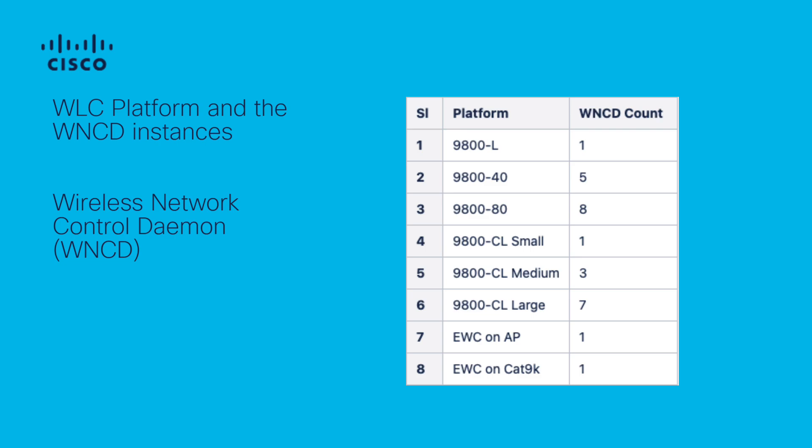Wireless client sessions, however, can roam between WNCDs as clients move from one AP to another. Currently, the Cisco 9800 platform uses the site tag as an indicator of AP proximity, assigning all APs within the same site tag to a single WNCD. This approach can lead to uneven distribution — some site tags may have many APs while others have only a few, causing high memory and CPU usage on certain WNCD instances.